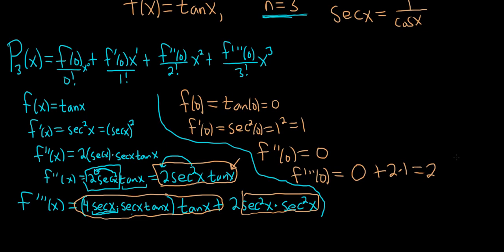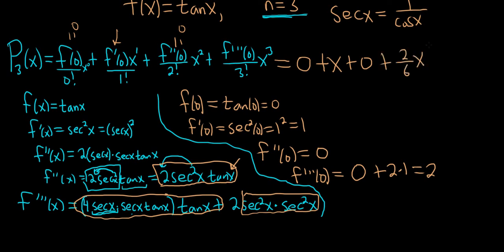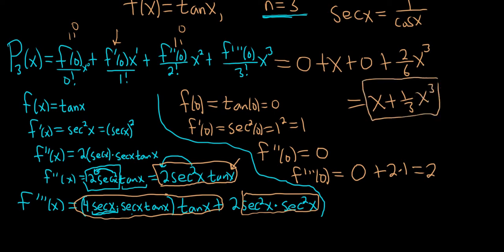Now it's finished. Plugging everything into the formula: f(0) is 0 so that piece vanishes; f'(0) is 1 so we get 1 over 1 factorial times x, which is just x; f''(0) is 0 so that term is 0; and f'''(0) is 2 so we get 2 over 3 factorial times x cubed, and 3 factorial is 6. So this simplifies to x plus one-third x cubed — and that is the final answer. It did require chain rules and product rules, but not too bad at all.